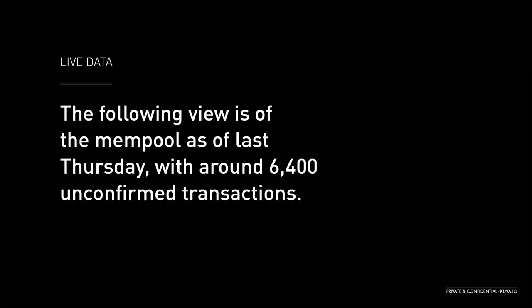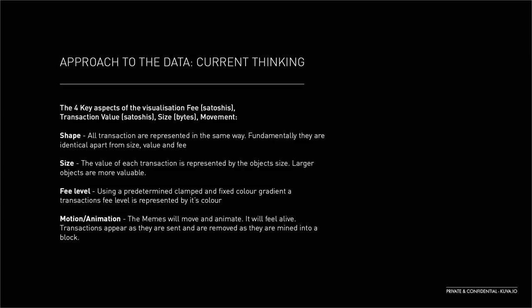The project itself will be built from live data and we feel it's vital for its integrity and success. The work and visuals that follow are built from real data gathered last Thursday with around 6,400 unconfirmed transactions in the pool. There are four key aspects to the visualization: fee, value, size and movement. All transactions are represented in the same way — fundamentally identical apart from size, value and fee. The value of each transaction is represented by the object size, with larger objects being more valuable. Using a predetermined clamped and fixed color gradient, a transaction's fee level is represented by its color. Transactions will move and animate — the project should feel alive, with transactions appearing as they are sent and removed as they are mined into a block.